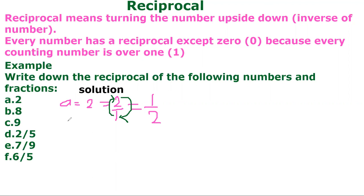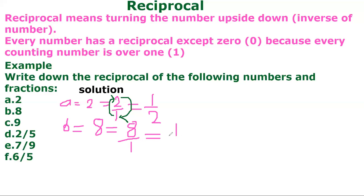Let's see B: the reciprocal of eight. The fraction for eight is eight over one, and eight over one is the same as eight. The reciprocal of eight over one: we are turning the number upside down. So here will be one over eight, because the one will be at the top and the eight will be at the bottom.